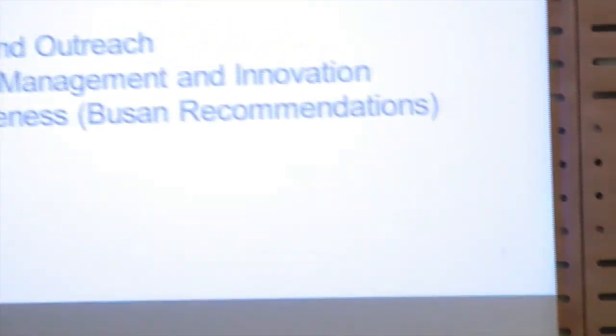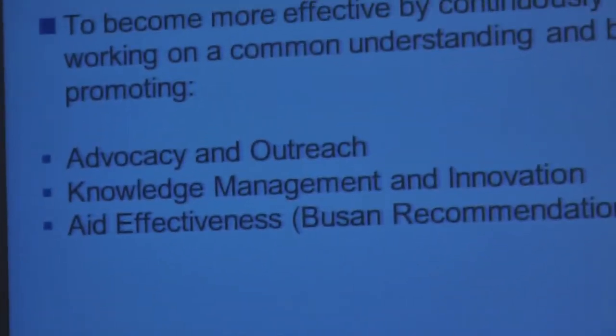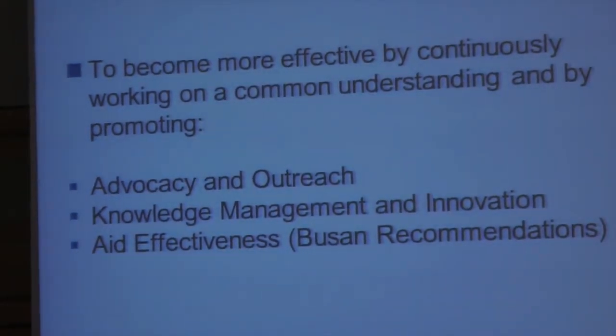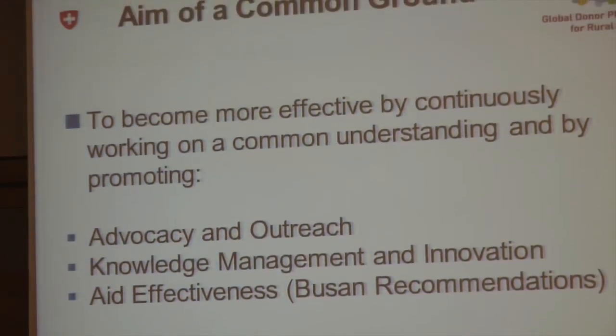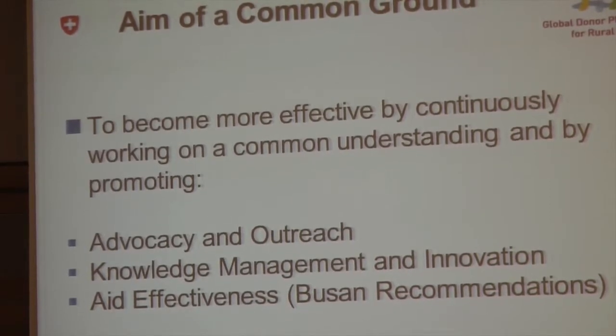I will quickly go through the work streams or the topics and then focus a little bit on how we could proceed with this document. On common ground, this is an effort to find consensus on what topics and approaches are relevant for rural development or rural transformation. The aim is to become more effective by continuously working on a common understanding and by promoting advocacy, outreach, knowledge management, innovation, and aid effectiveness. There are nine topics now being promoted.